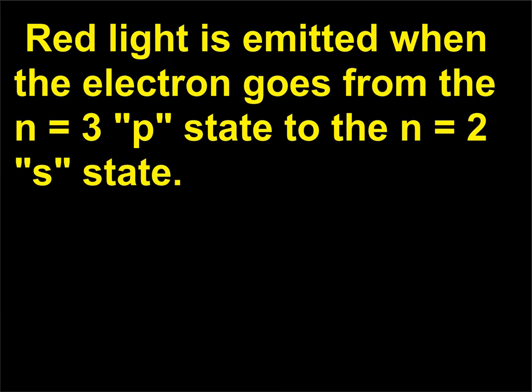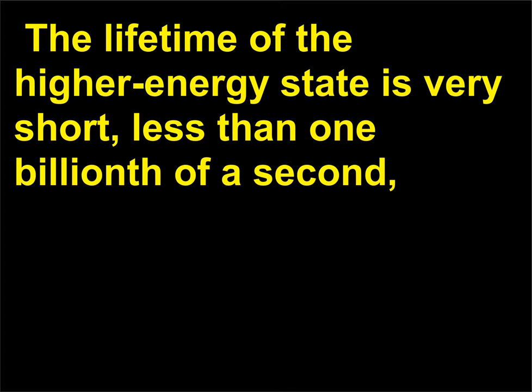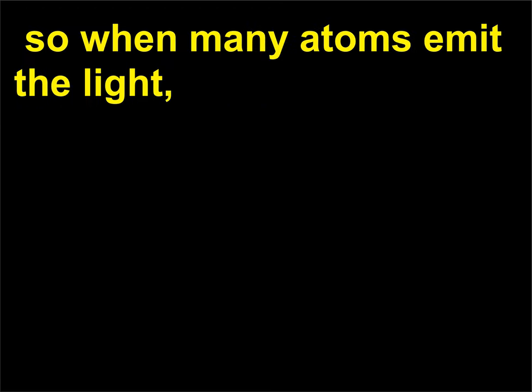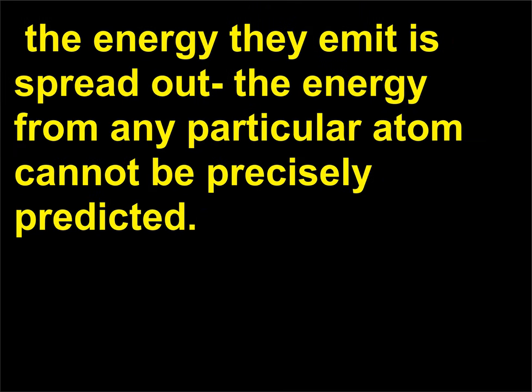Red light is emitted when the electron goes from the n = 3 P state to the n = 2 S state. The lifetime of the higher energy state is very short — less than one billionth of a second. So when many atoms emit the light, the energy they emit is spread out; the energy from any particular atom cannot be precisely predicted.